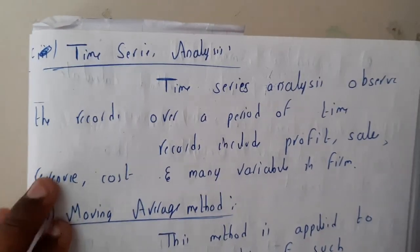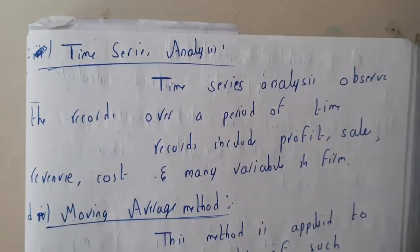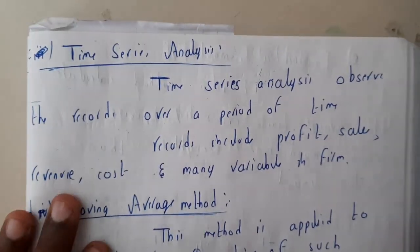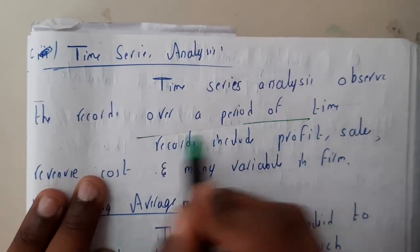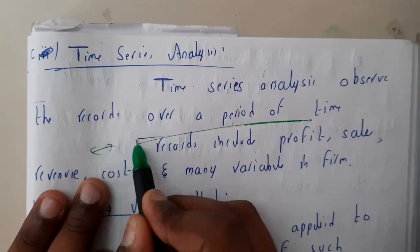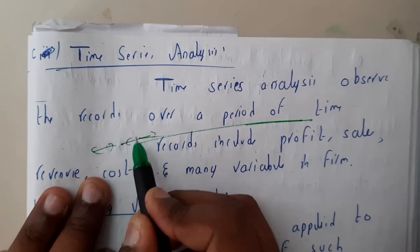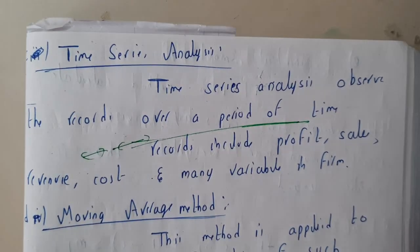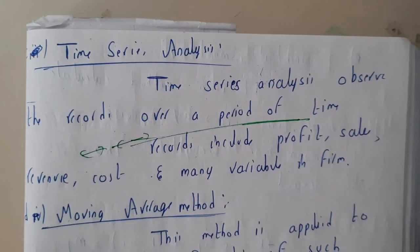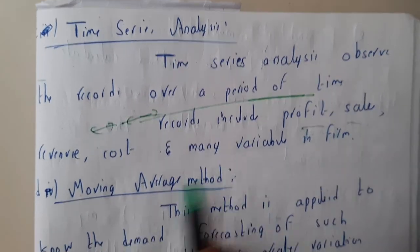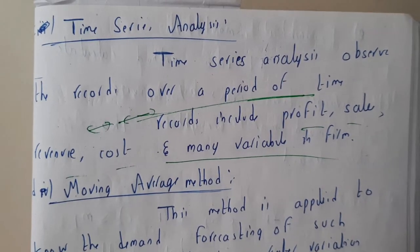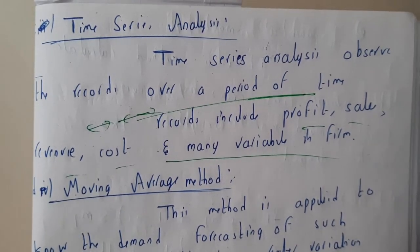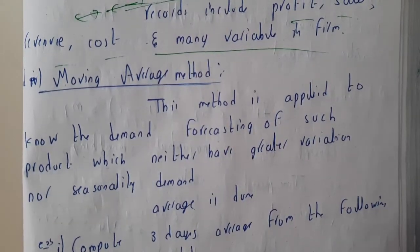The third method is time series analysis. Time series analysis observes records over a particular period of time — for example, if in the last six months sales acted in a certain way, we assume the next six months will be better, comparing with previous years with respect to time. Records include profit, sales, revenue, and cost.